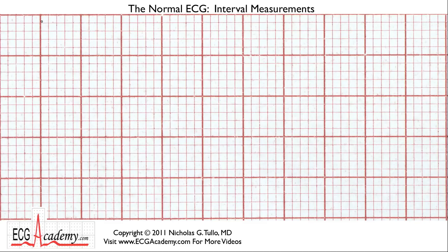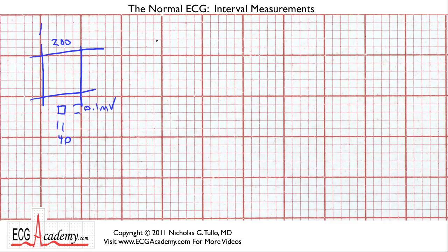A quick review: here is a typical ECG grid with large boxes and small boxes. Small boxes are one millimeter apart. Assuming standard measurements, you have 0.1 millivolts high for each little box and 40 milliseconds wide for each little box. The big boxes are 200 milliseconds wide. For those used to seconds, there are 25 millimeters in a second — that's five big boxes — so each big box is one fifth of a second.